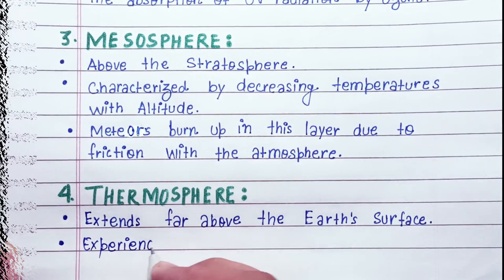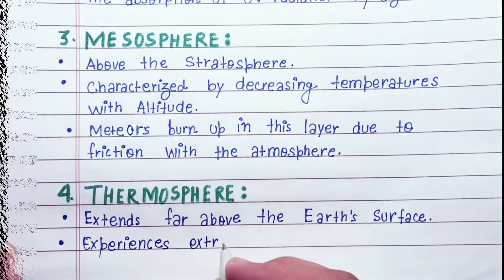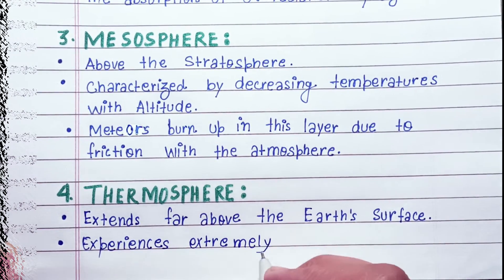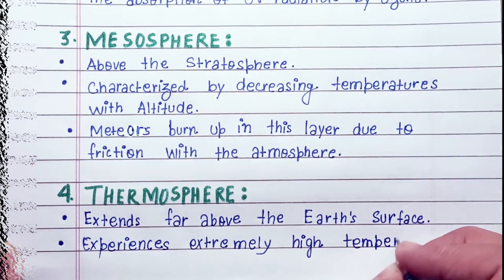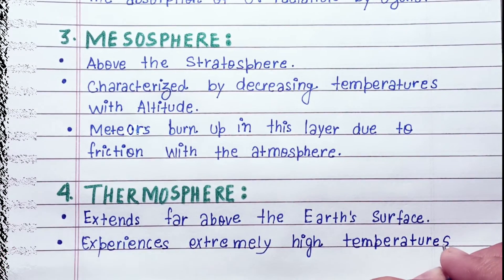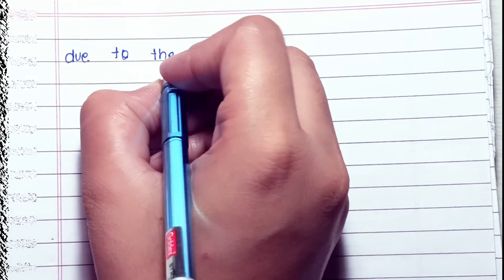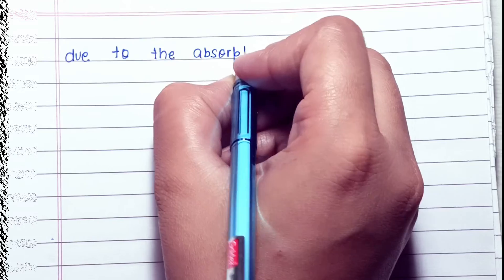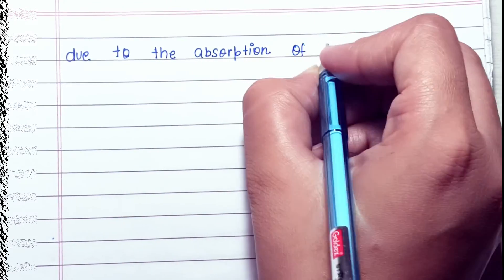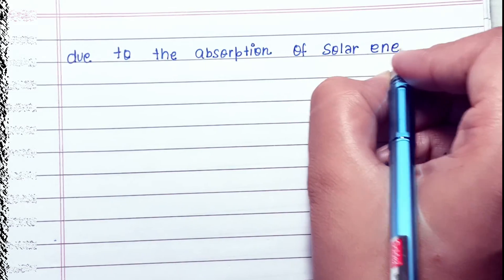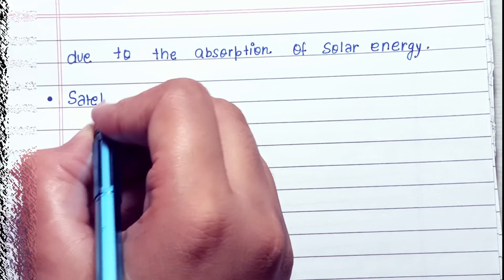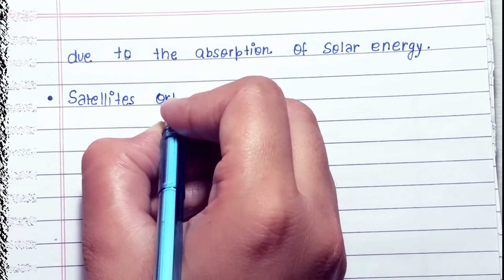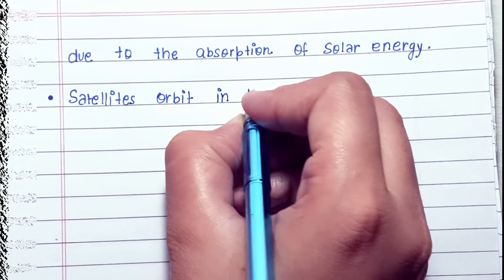Thermosphere — extends far above the Earth's surface. Experiences extremely high temperatures due to the absorption of solar energy. Satellites orbit in this layer.